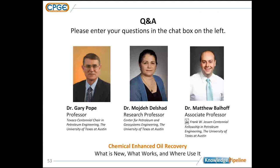Another question: can UTChem model nano-emulsion EOR — kinetically stable emulsions rather than microemulsions? UTChem does have kinetic mechanisms where we don't assume thermodynamic equilibrium, so we might be able to handle that in the future. A related question: can UTChem model shear-thickening in a polymer flood? UTChem does include a shear-thickening model that has been incorporated for quite some time. Regarding Deborah number: the empirical correlation was developed based on relaxation time and equivalent shear rate, covering a range of Deborah numbers typically from 1 to about 10, history-matched against at least 20 different sandpack experiments.